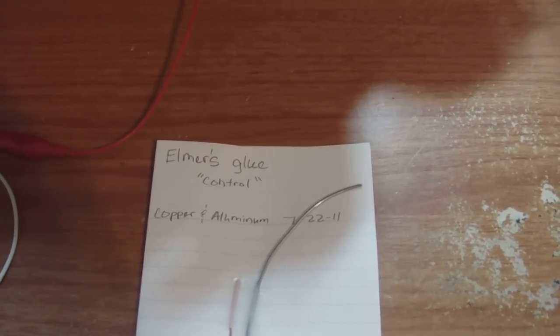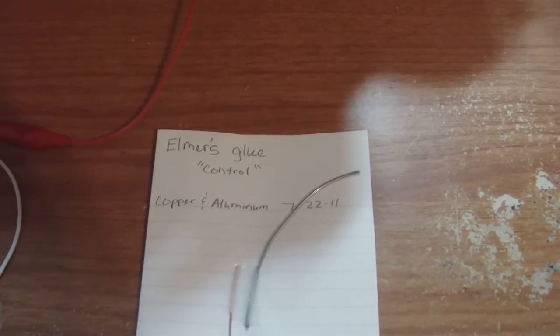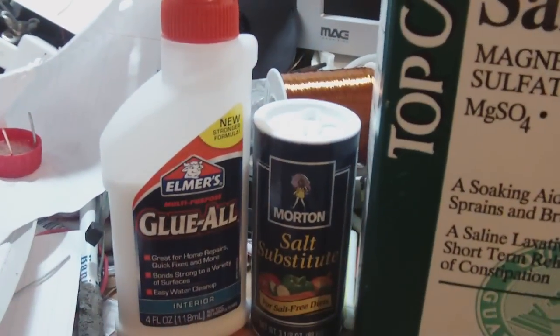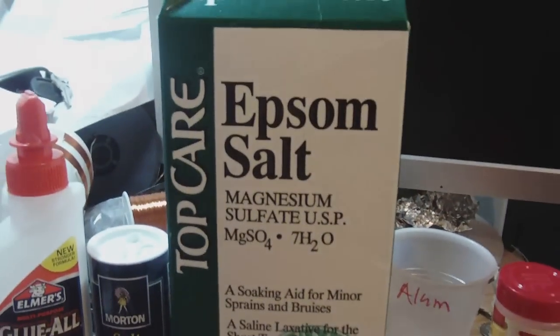I'm making this video to show you guys what makes my latest glue crystal cell batteries so special. The latest glue cell battery is made up of these three ingredients: Elmer's glue, salt substitute, and Epsom salt.